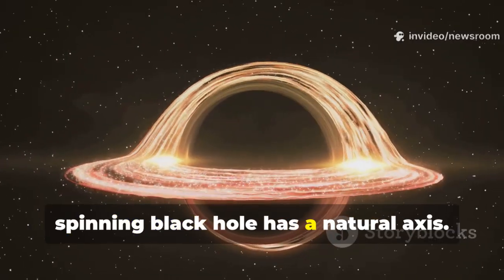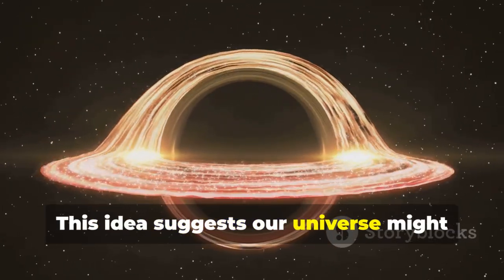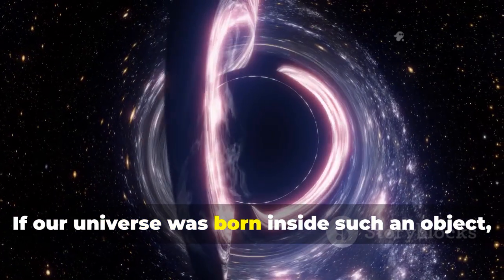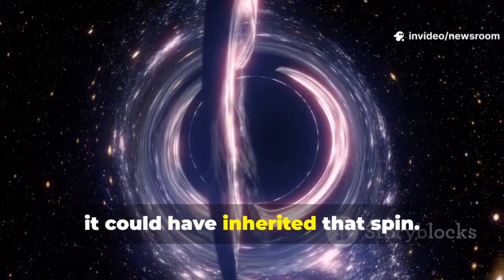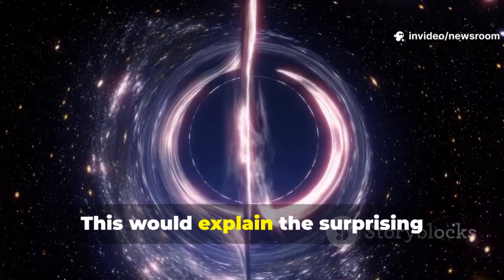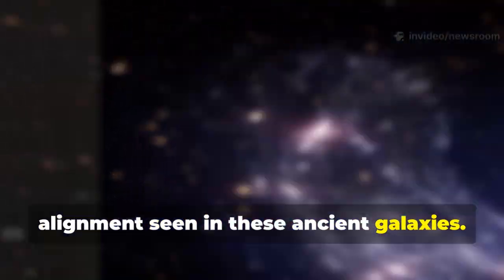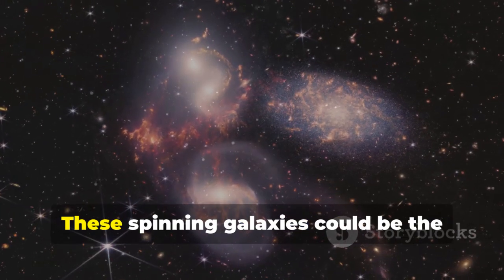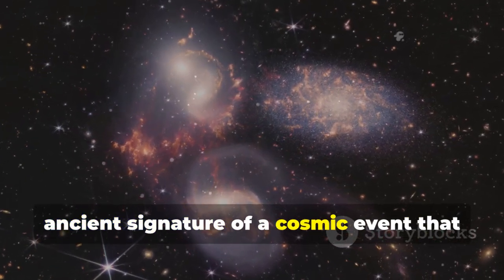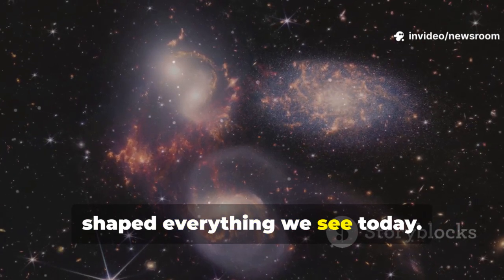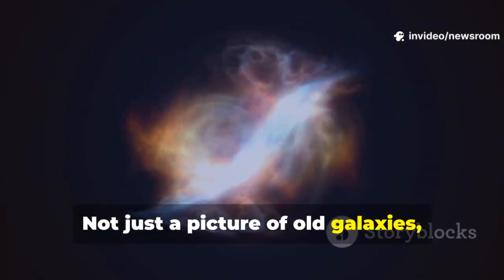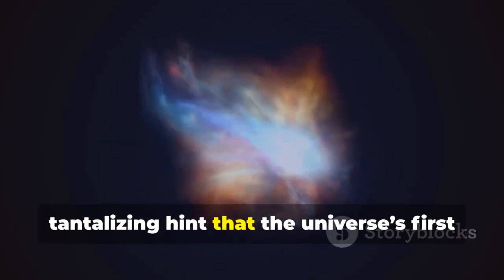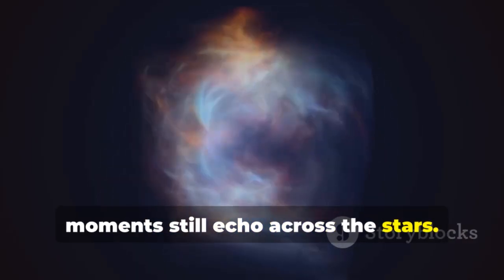A spinning black hole has a natural axis. This idea suggests our universe might have emerged from such a cosmic object, inheriting its spin. If our universe was born inside such an object, it could have inherited that spin. This would explain the surprising alignment seen in these ancient galaxies. The JWST may have uncovered a fossil of our universe's birth. These spinning galaxies could be the ancient signature of a cosmic event that shaped everything we see today—not just a picture of old galaxies, but a clue to our cosmic origins, a tantalizing hint that the universe's first moments still echo across the stars.